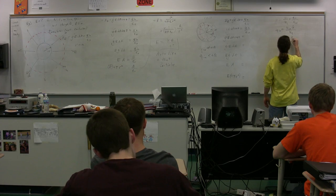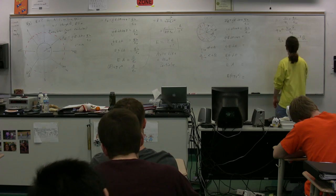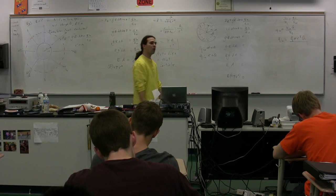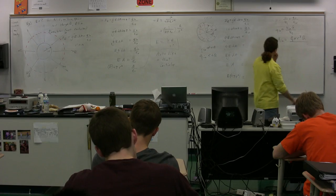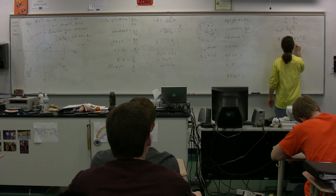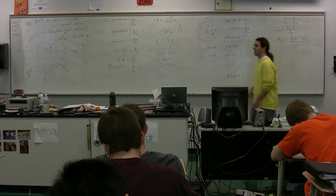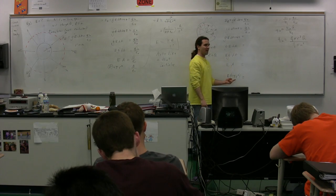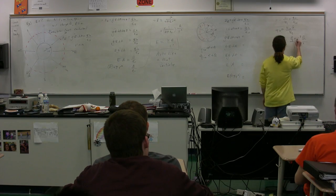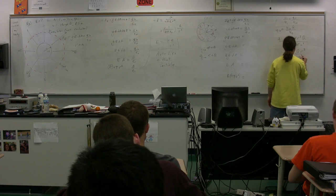The volume inside the Gaussian surface is four-thirds pi r cubed, and the total volume of the sphere is four-thirds pi a cubed. Notice that the four-thirds pi cancels out, and we get that the charge inside equals big Q times r cubed divided by a cubed.